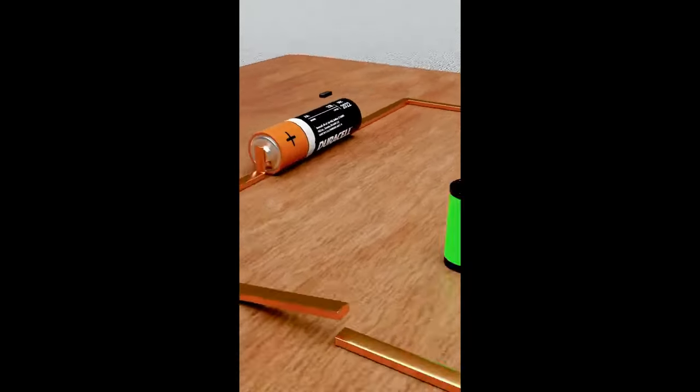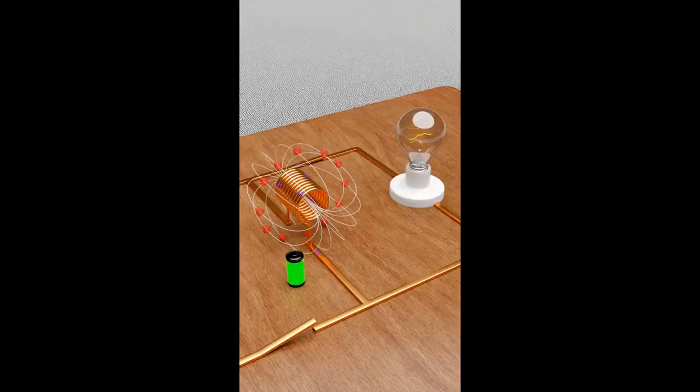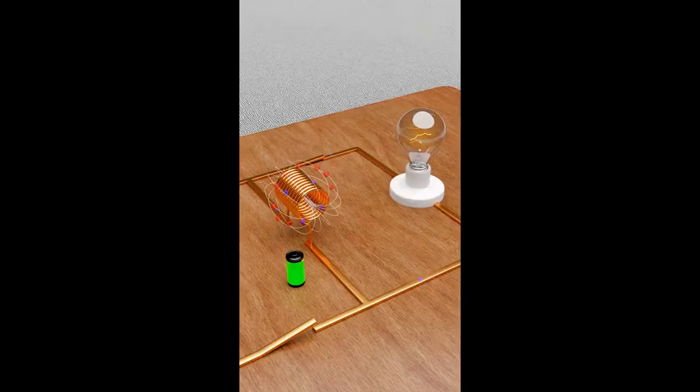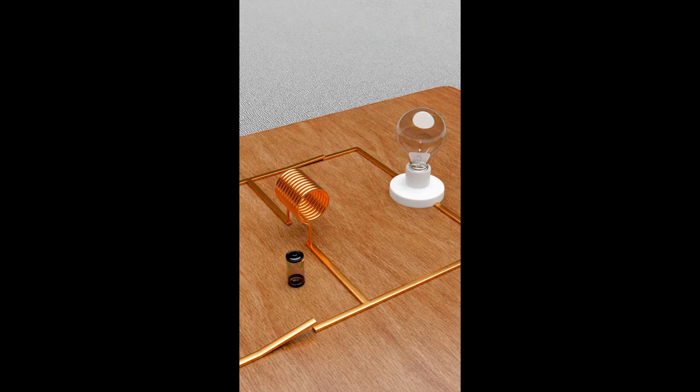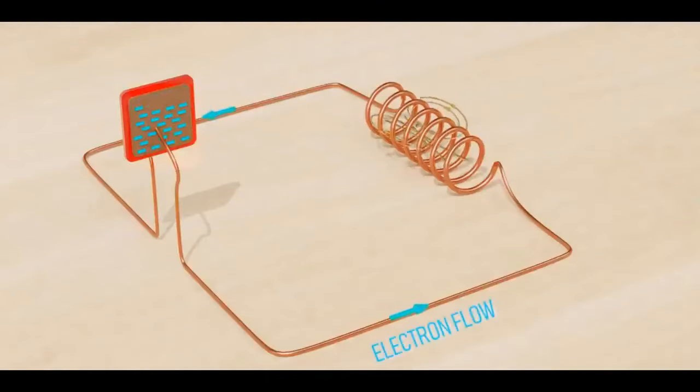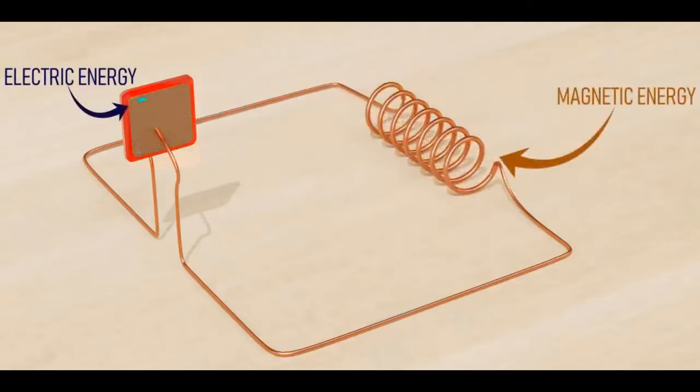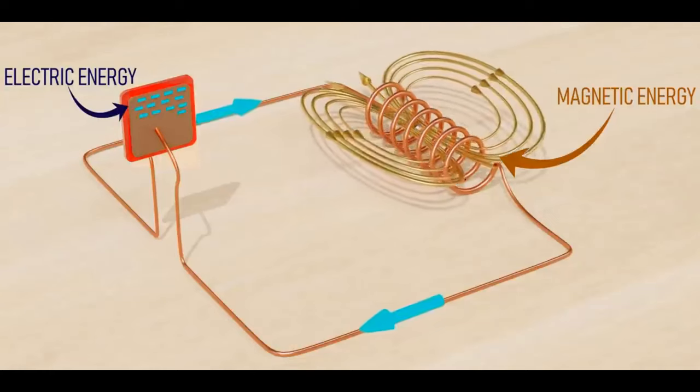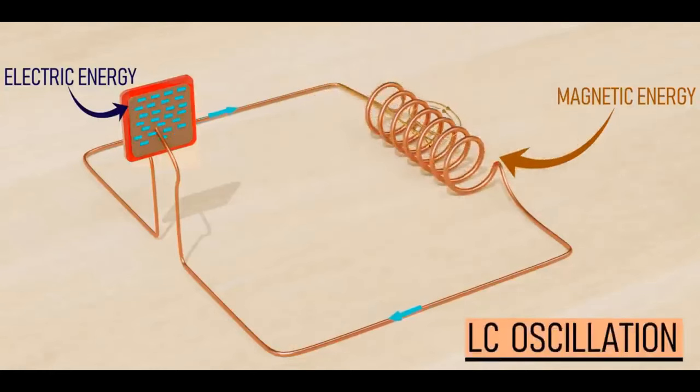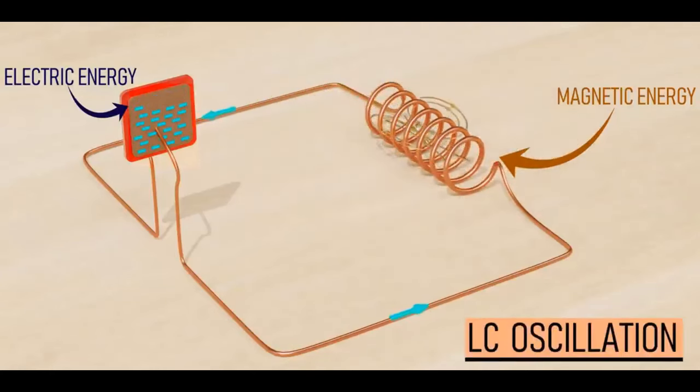When these two types of reactive components are directly connected together, their complementary tendencies to store energy will produce an unusual and interesting result. If either the capacitor or the inductor starts out in a charged state, the two components will exchange energy between them back and forth, creating their own AC voltage and current cycles.